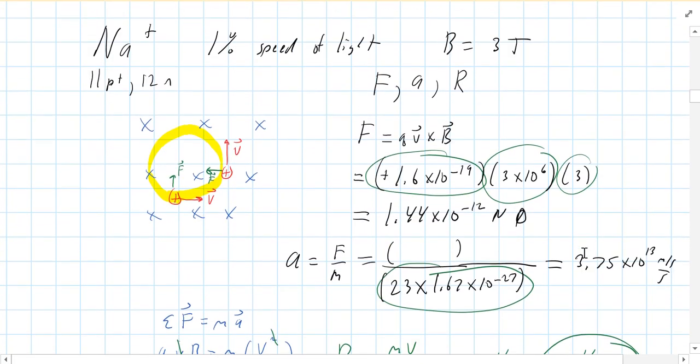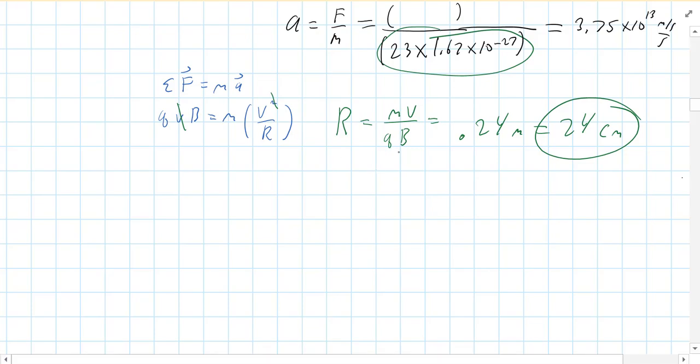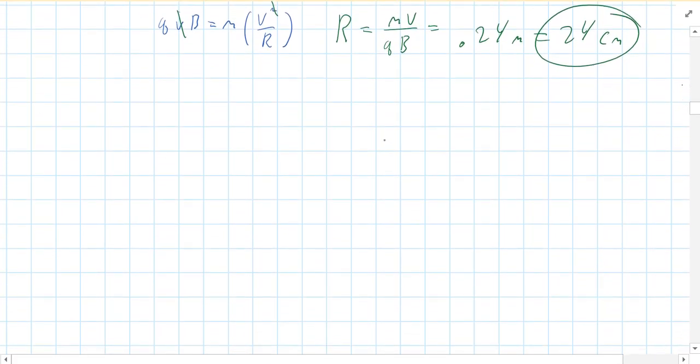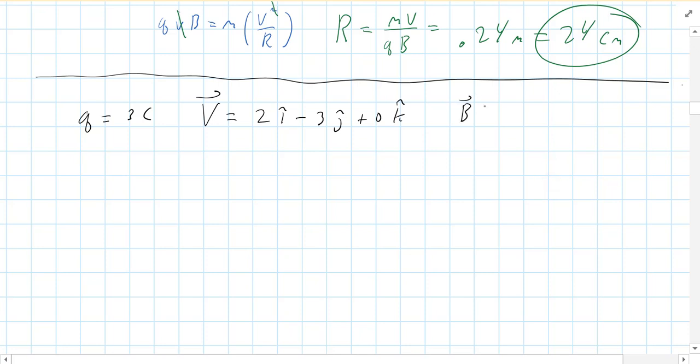The next example I have for you is a three-dimensional example. So this was a 2D example, right? Well, let's do a 3D example. Let's say I've got a charge. And that charge is 3 coulombs. And let's say the velocity of that particle at this moment is 2 in the i-hat direction, minus 3 in the j-hat direction, plus 0 in the k-hat direction. And let's say he flies into a magnetic field that has the following direction. 1 i-hat plus 2 j-hat minus 4 k-hat teslas. Oh, and the velocity is in meters per second.